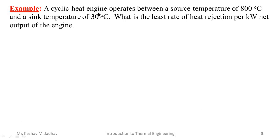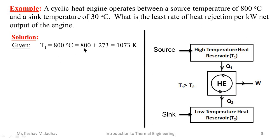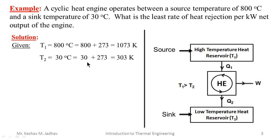As this numerical is based on heat engine, first we can draw a block diagram for the heat engine with the source and the sink. It is given the source temperature is 800 degrees Celsius, so T1 equals 800 degrees Celsius, which we convert to Kelvin by adding 273, giving 1073 Kelvin. The sink temperature is 30 degrees Celsius, so T2 equals 30 degrees Celsius, which converts to 303 Kelvin.